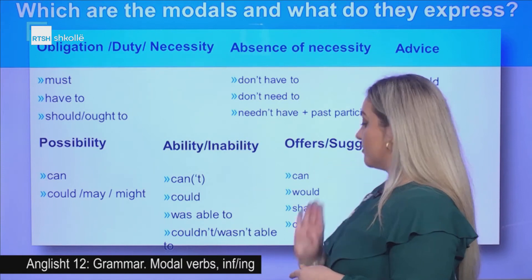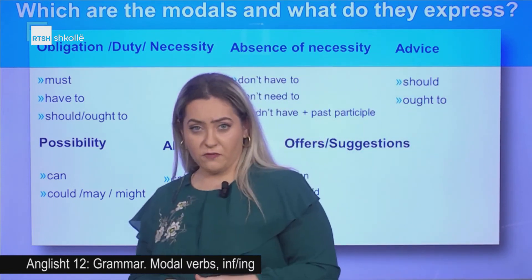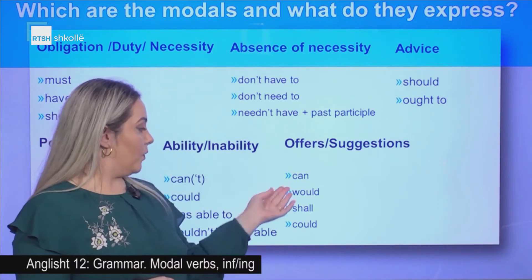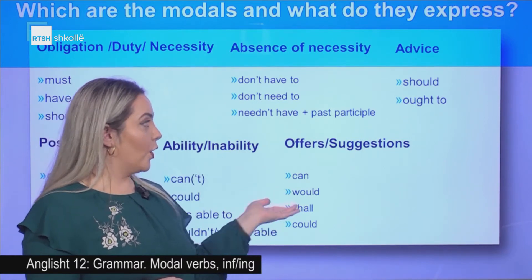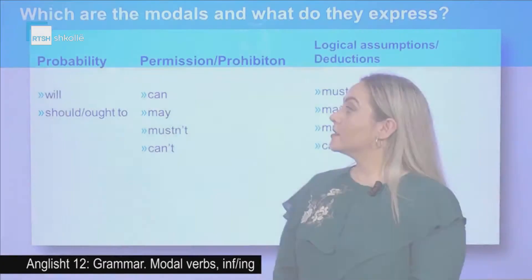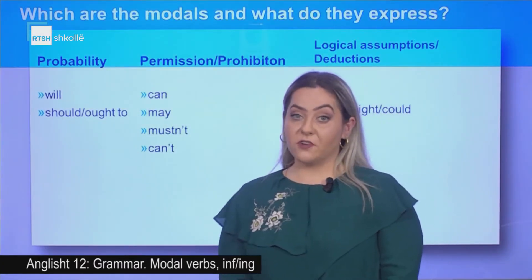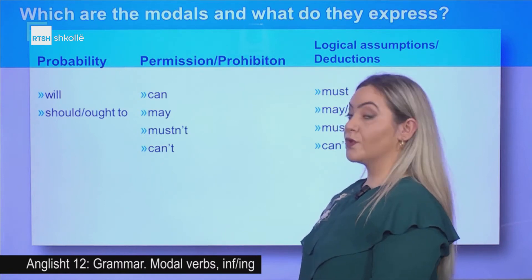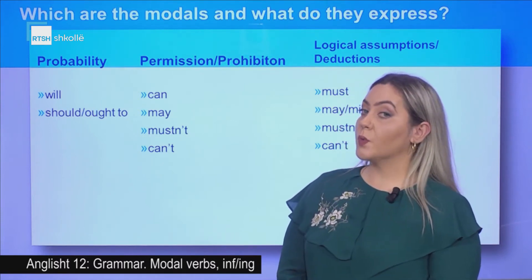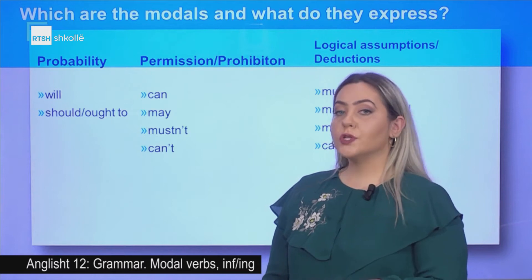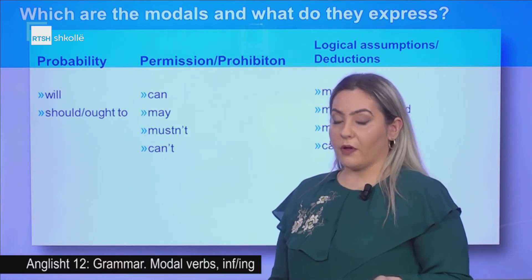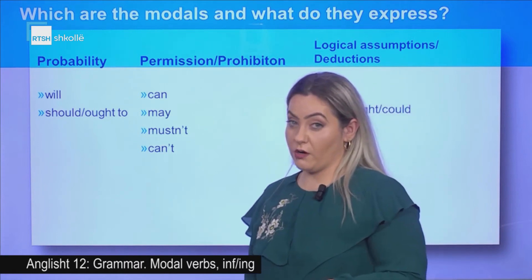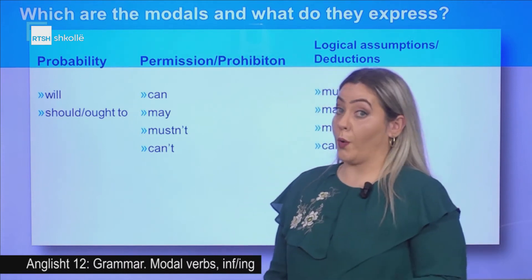Let's see offers and suggestions. Which modal verbs are used for offers and suggestions? Can, would, shall, or could. Probability: will, should, ought to. If you use 'will', you are totally sure for something to happen. With 'should' or 'ought to', you are not totally sure that something can or will happen.